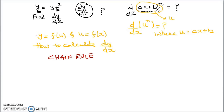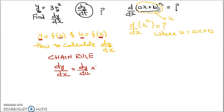Chain rule states: if y is a function of u and u is further a function of x, then dy upon dx may be written as dy upon du into du by dx. This is called chain rule. For remembering, you can think of du and du cancelling, though technically they don't cancel — this is derived from chain rule formally. But in physics, using dy by du into du by dx is good enough.